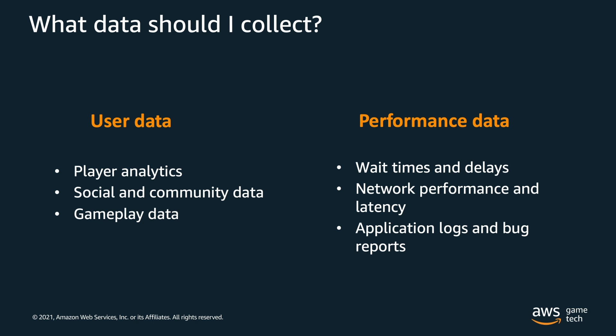On the other side, there's performance data. This includes wait times and delays — no player wants to wait around in a matchmaking lobby for 20 minutes. There's network performance and latency; if you're developing a latency-sensitive game such as a first-person shooter, you have to pay close attention to the end-user latency your players are experiencing so that you can optimize it. And finally, there's application logs and bug reports — when you experience errors or bugs, you'll want a way to analyze and remediate issues as fast as possible.